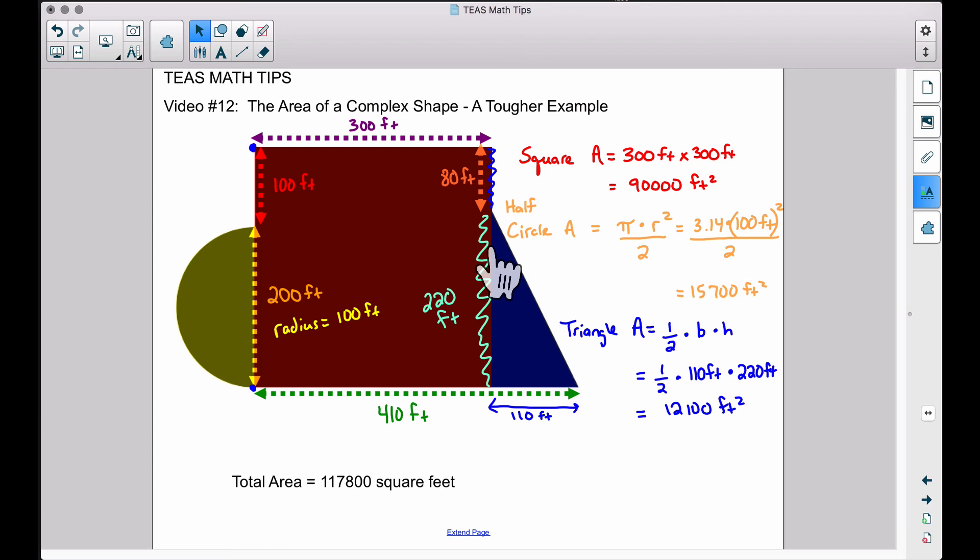And there you have it, another problem dealing with the area of a complex shape, breaking it up into shapes that we can work with—such as a half circle, a square, and a triangle in this example. And that's it for this video. I hope it helped.